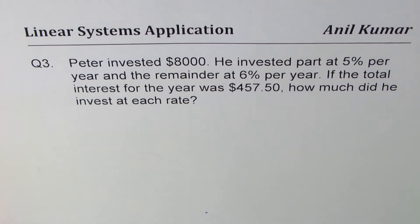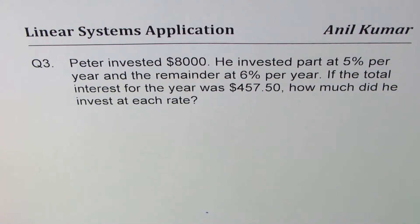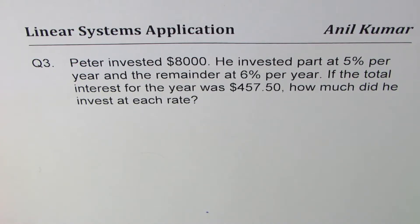I am Anil Kumar. We are discussing how to solve linear systems. Here is question number three: Peter invested $8,000. He invested part at 5% per year and the remainder at 6% per year. If the total interest for the year was $557.50, how much did he invest at each rate?